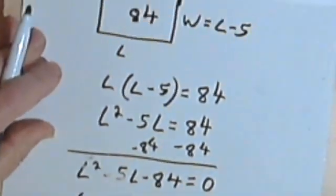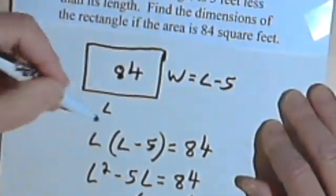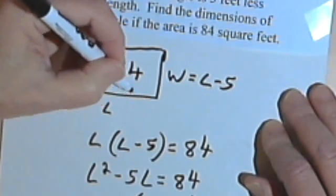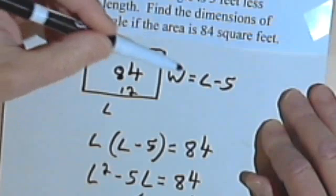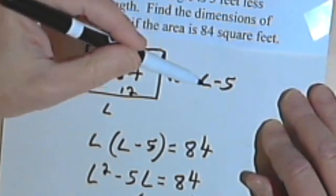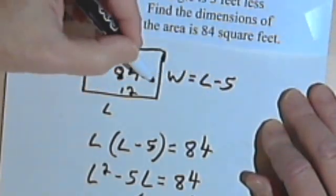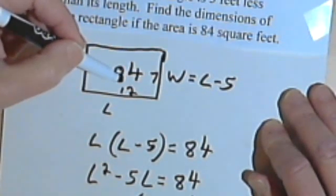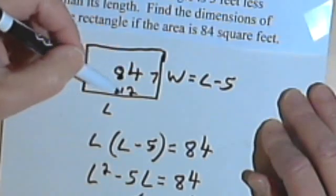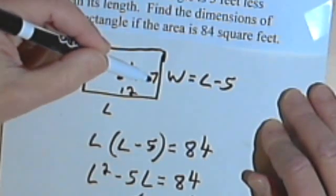Let's go back to the original problem. If the length is 12, then the width, which was 5 less than the length, or 5 less than 12, is 7. 7 times 12 is 84. So now I've got my dimensions. The length is 12 and the width is 7.